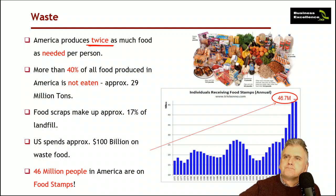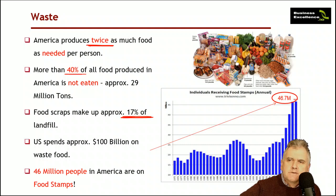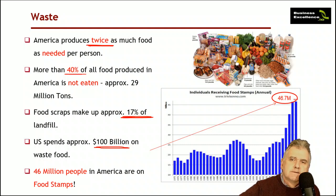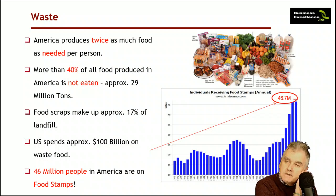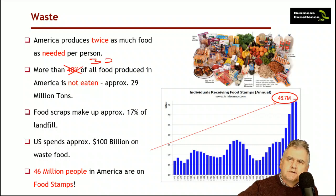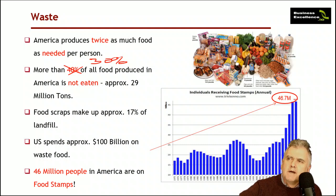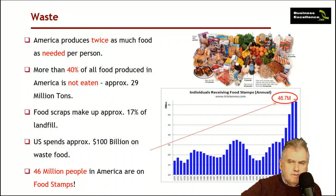About 17% of landfill in America is made up of food, and they spend around $100 billion managing that 17% as a waste item — not even the cost of growing the food in the first place. About 46 million out of 340 million people are on food stamps and hungry. That doesn't make much sense when so much food is produced but so many people never eat it. In Europe that figure is closer to 30% — still a very large number.